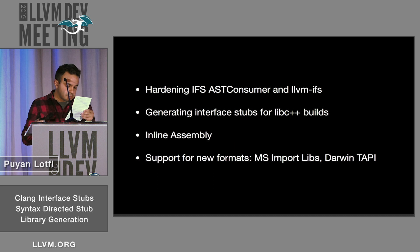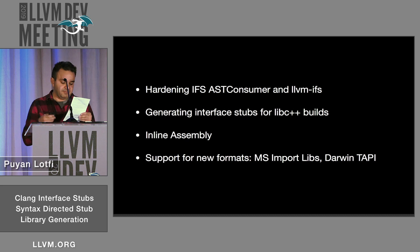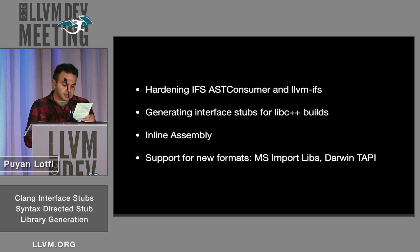Some items of future work include the hardening of the AST scanning and symbol merging components of Clang Interface Stubs. A good future application would be to use Interface Stubs to track ABI changes across different versions of libc++. Currently, this work only supports C and C++ code bases, though with the LLVM integrated assembler it should be possible to support assembly sources as well. Finally, there is room for expanding support to other stub formats like Microsoft Import Libraries, Darwin's TAPI format, and the more recent ELF TAPI format.